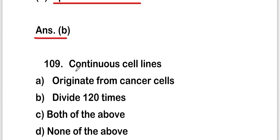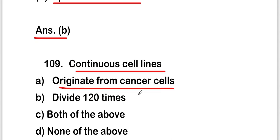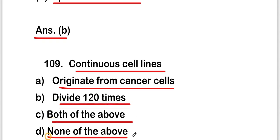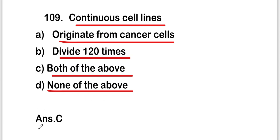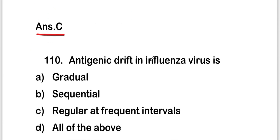The next question is: continuous cell lines — originate from cancer cells, divide 120 times, both of the above, or none of the above? The right answer is option C, that is both of the above. Continuous cell lines originate from cancer cells and divide more than 120 times.